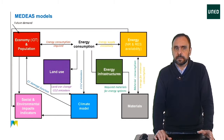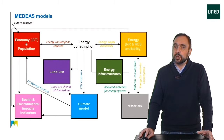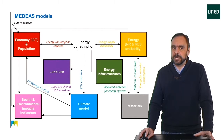The MEDEAS model is conceptually organized in seven large modules: Economy, Energy, Infrastructures, Materials, Land Use, Social and Environmental Impacts Indicators, and Climate Change. The models of economy and energy are the most extensive and reach the highest degree of disaggregation. The model consists of a modular and flexible structure, where each module can be expanded, simplified, replaced by another version, or new modules can be added.